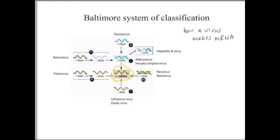Here in the very center of our table is a messenger RNA, and the way this diagram is set up, each genome type points directly toward that messenger RNA.